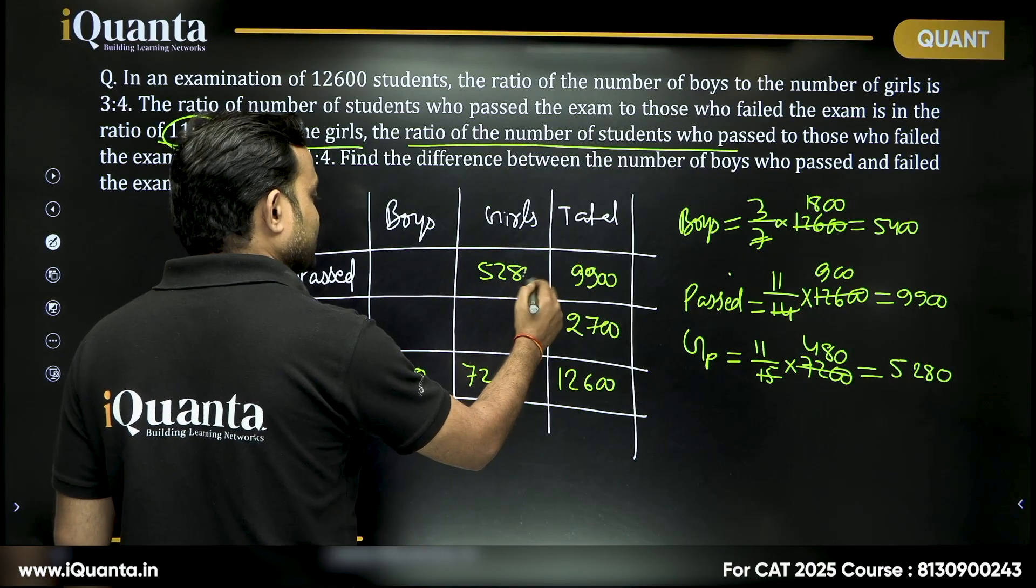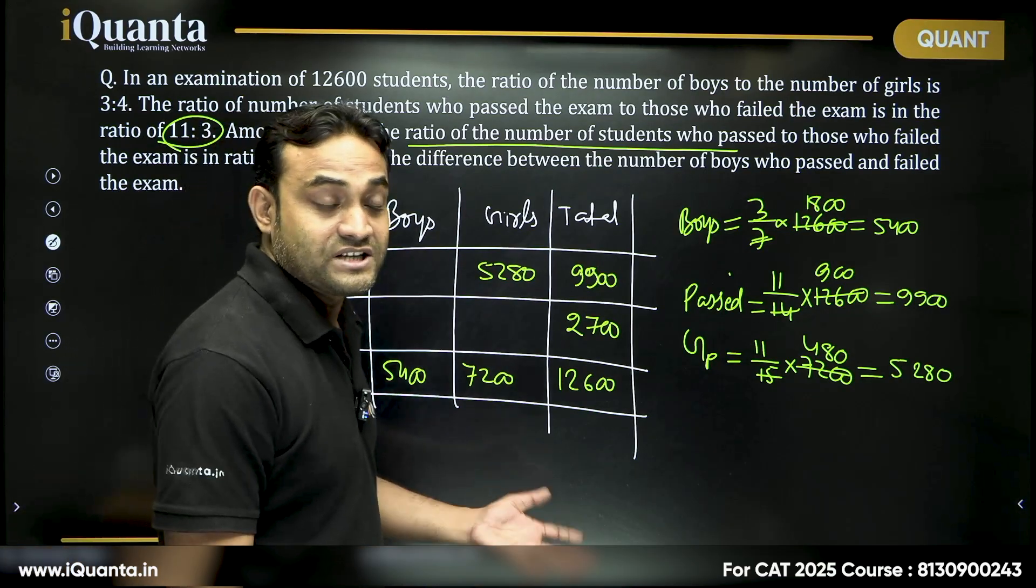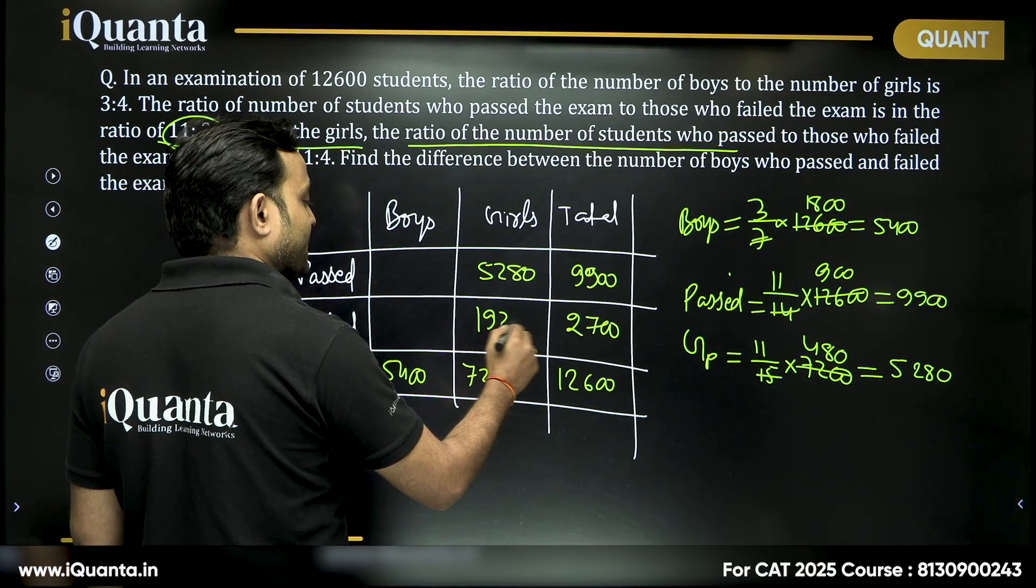So 5,280. Number of girls who failed 7,200 minus 5,200 is 2,000 minus 80 will be 1,920.